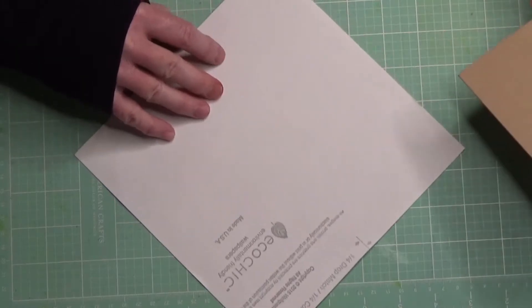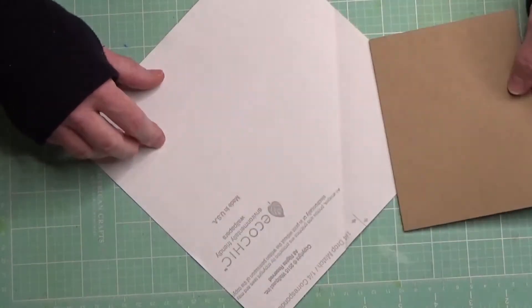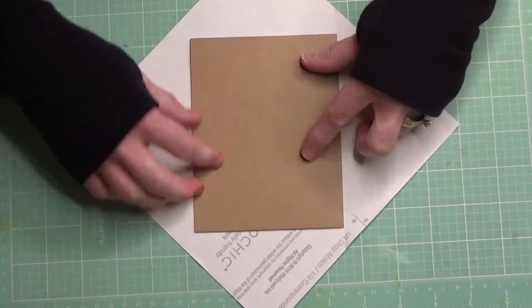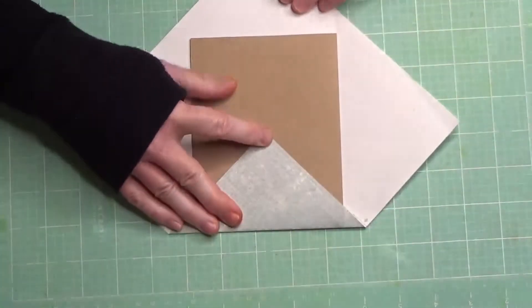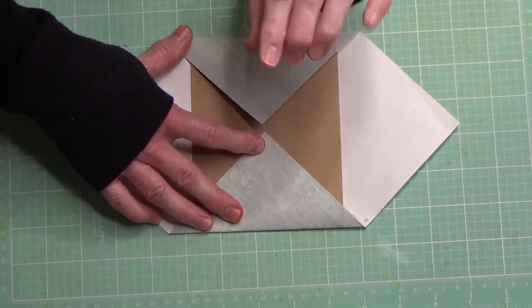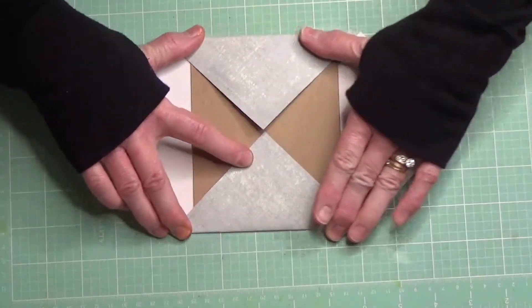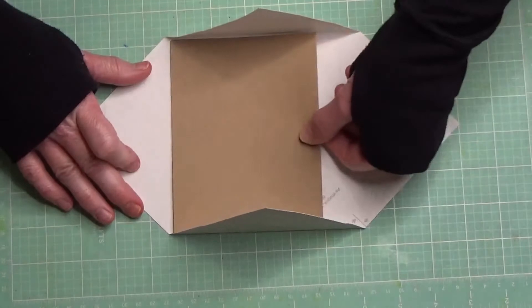Flip it over so it kind of looks like a diamond there. Center the card in the middle. So I want to slide the card in this way. So this is the side. I'm going to go ahead and do that one and just crease it. And don't make it too tight. You want to leave just maybe an eighth of an inch extra.